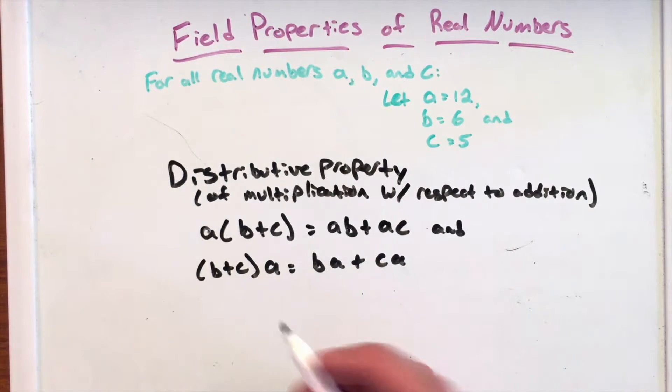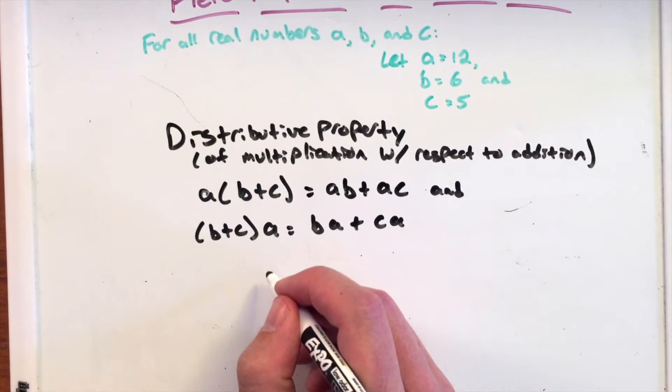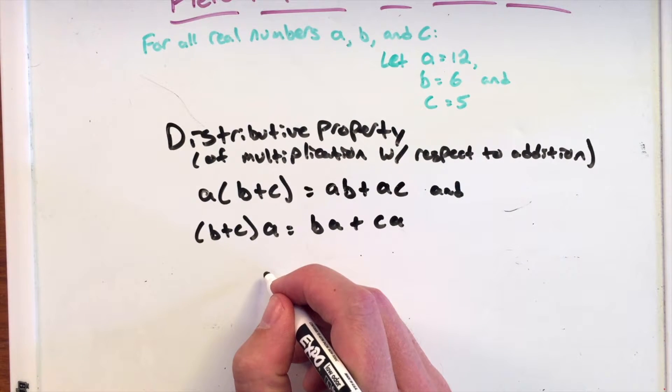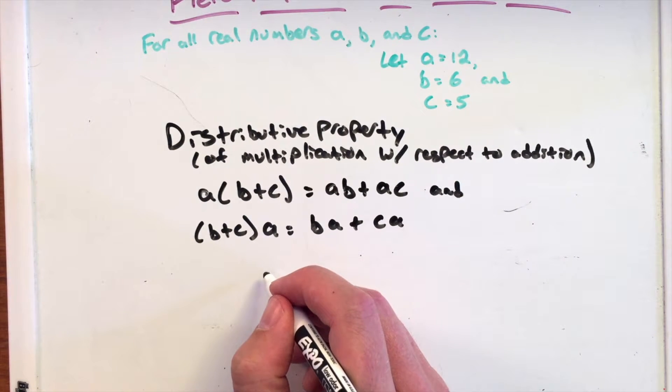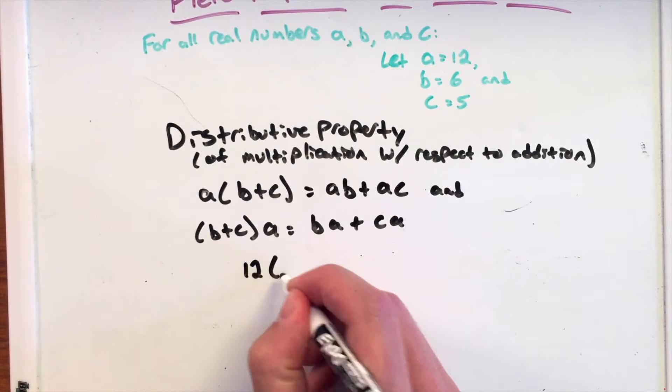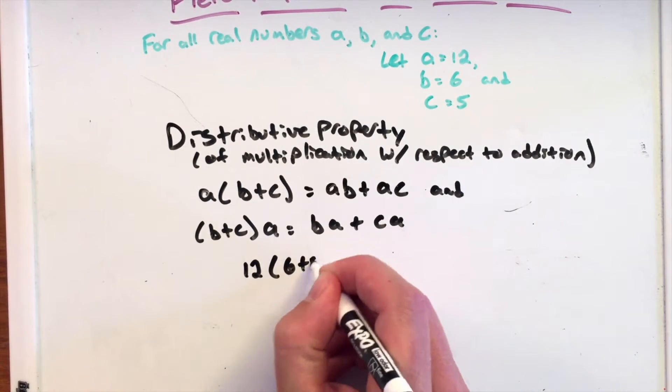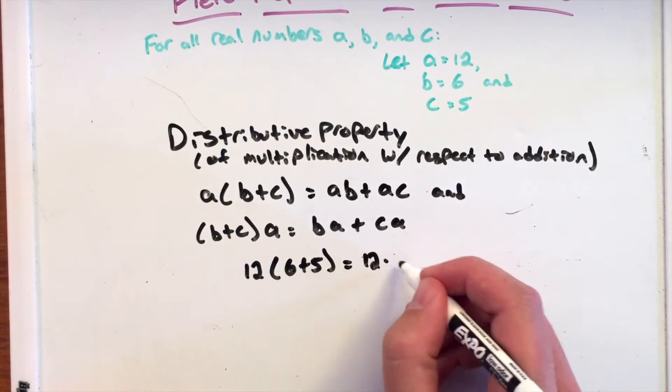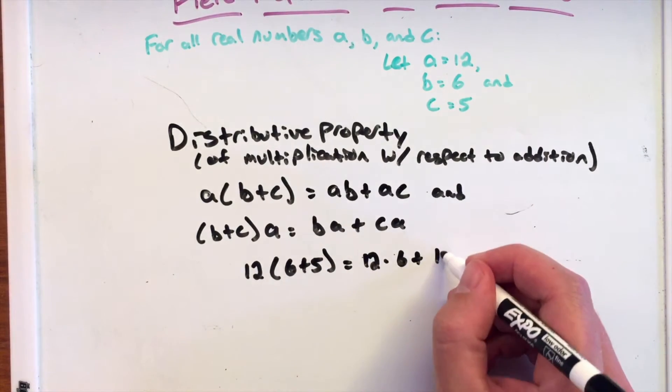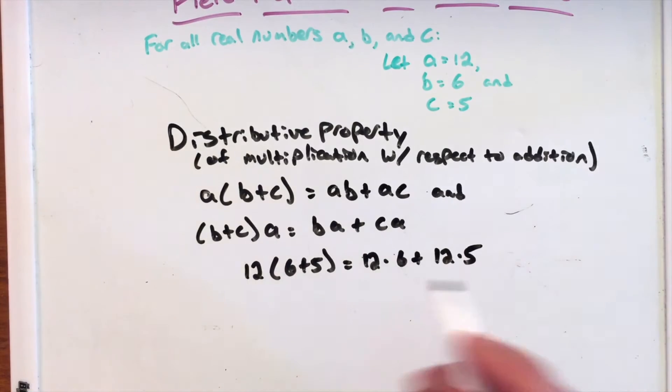If we have it like before with our values where A is 12, B is 6, and C is 5, we have 12 times 6 plus 5. That is the same thing as 12 times 6 plus 12 times 5.